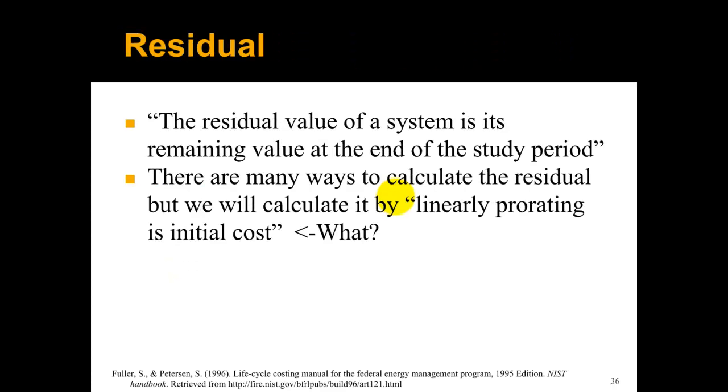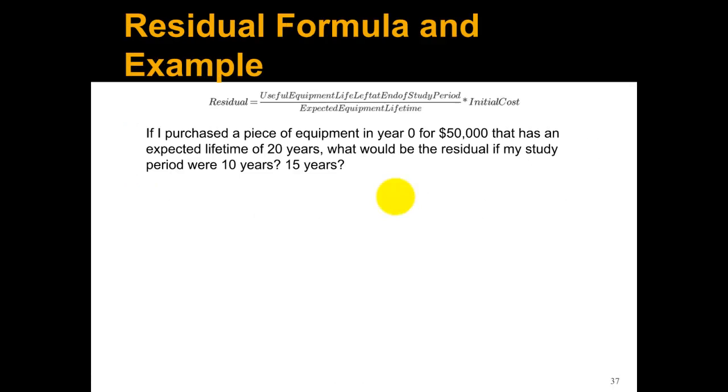Now we're going to show you how we're going to calculate in this course, and this is going to be called something called a residual. Again, this definition's right from the book: the residual value of a system is its remaining value at the end of the study period. There are many ways to calculate this, but we are going to calculate the residual by linearly prorating its initial cost, which sounds utterly ridiculous, but you'll see what I'm talking about with a few examples.